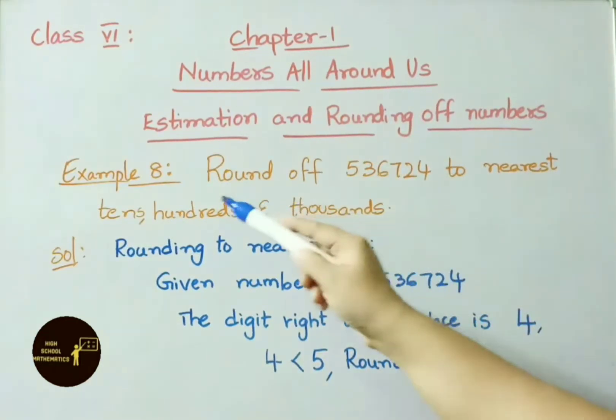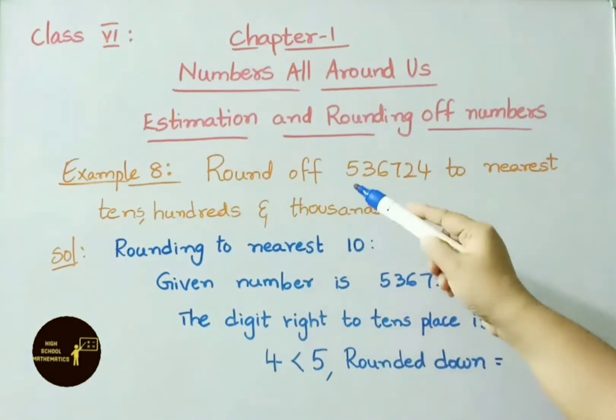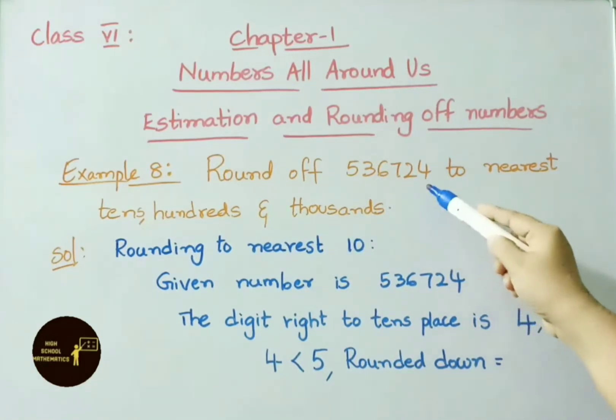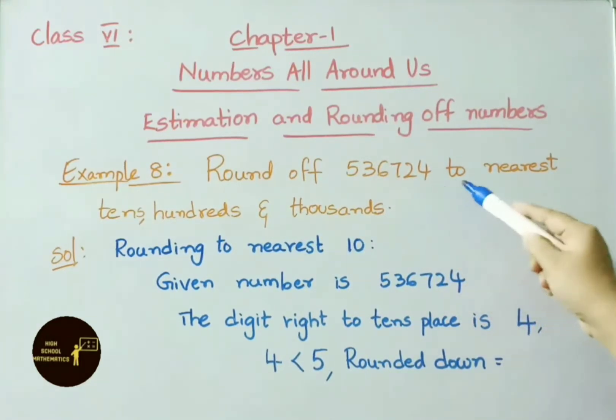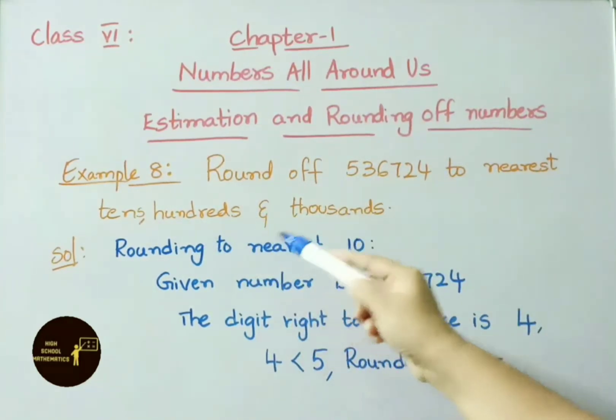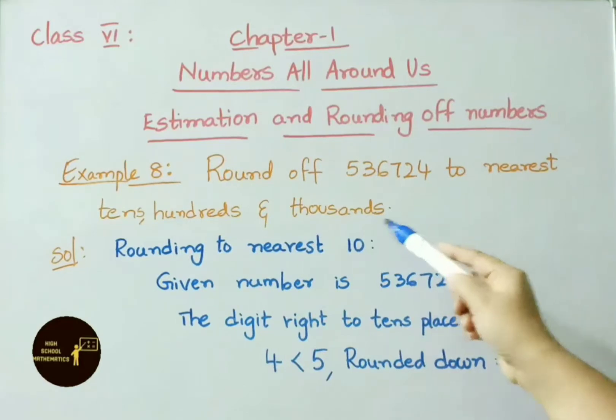See example 8. Round off 5,36,724 to nearest 10s, 100s and 1000s.